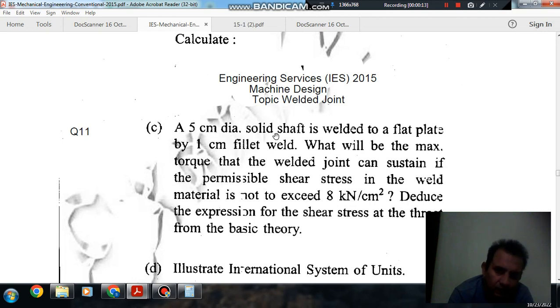A 5 cm diameter solid shaft is welded to a flat plate by 1 cm fillet weld. What will be the maximum torque that the welded joint can sustain if the permissible shear stress in the weld material is not to exceed 8 kN per cm²? Deduce the expression for shear stress at the throat from basic theory.